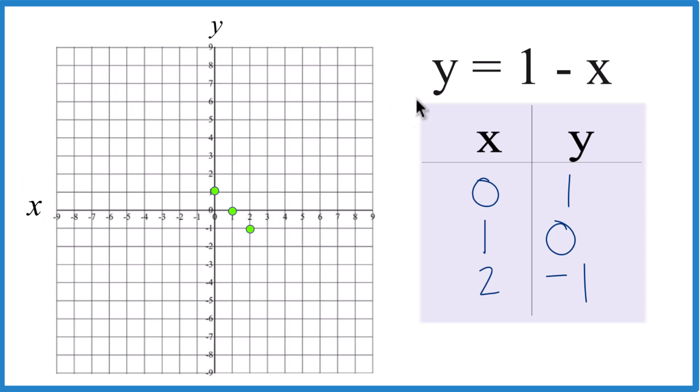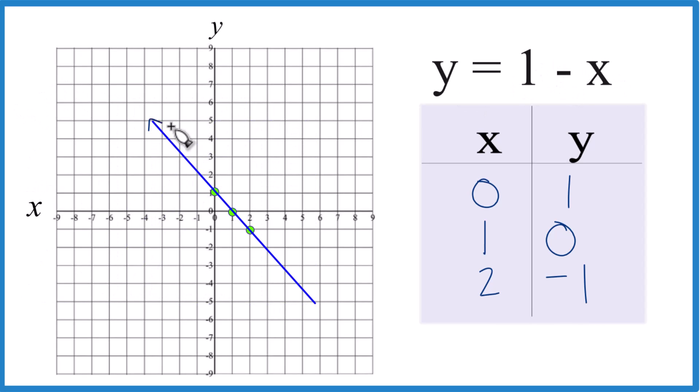So this is the graph for y equals one minus x. Let's put a line through that. We'll put arrows, show that this goes to infinity, and that's our graph for y equals one minus x. You can put any values in for x, you'll get a value for y, it's going to be on our line.